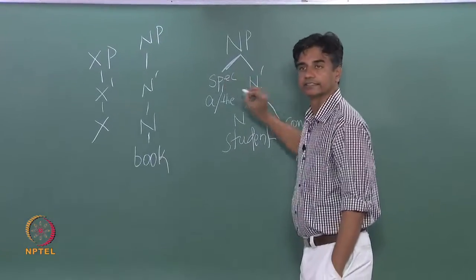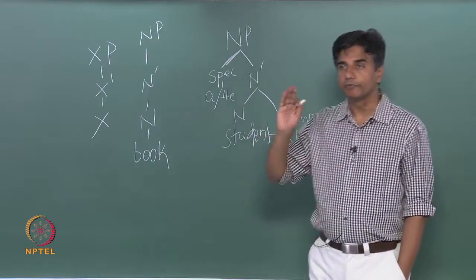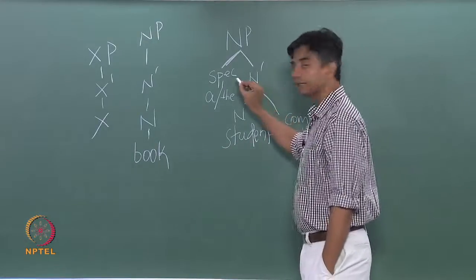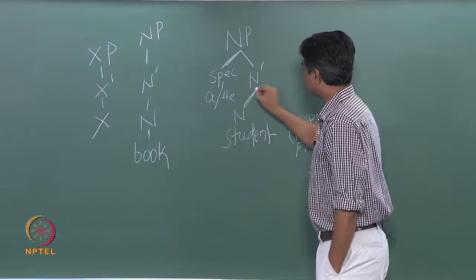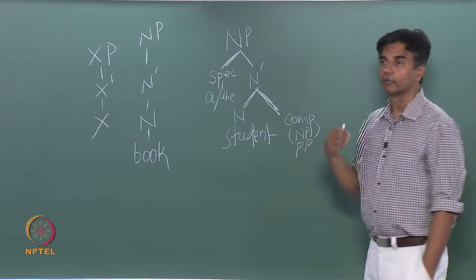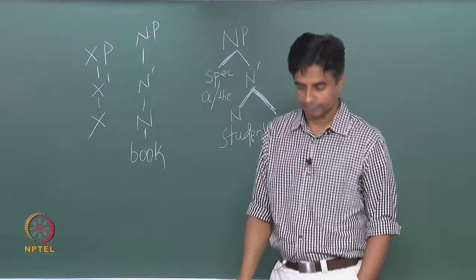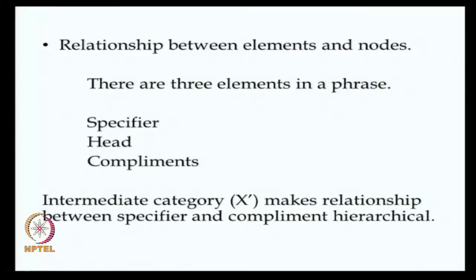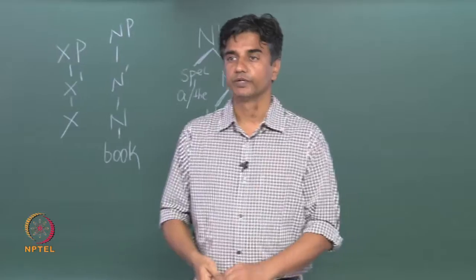Every phrase will have three things: specifier, head, and a complement. Not necessarily each position is filled — they may be empty — but there will be a space for the three things. The crucial relationship between a complement and a head is non-recursive, and I am going to talk about what it means to be non-recursive and recursive. The role of the intermediate category in understanding the distinction between head, complement, and specifier will also be highlighted. We will stick to examples so that we understand.